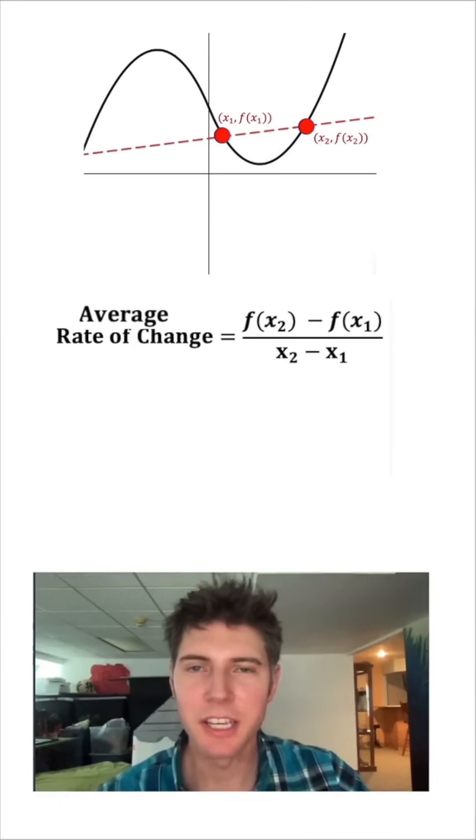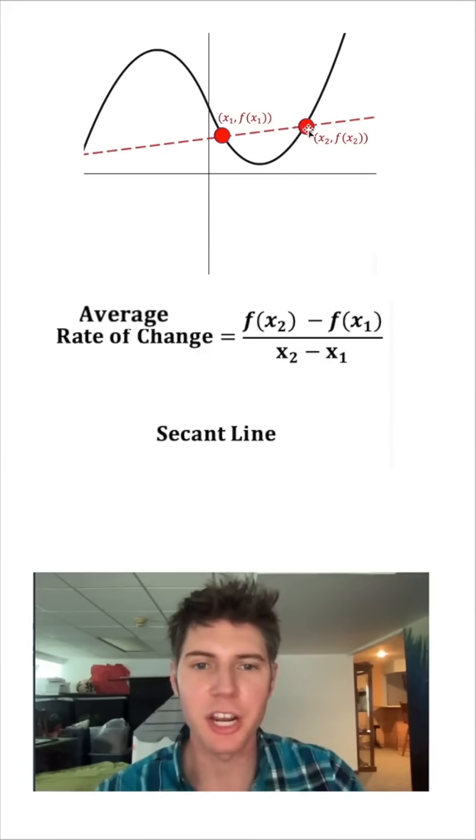If we extend this segment out, it gives us a line. And the name of this line is the secant line. And this formula that gives us the average rate of change, it's also gonna give us the slope of that secant line.